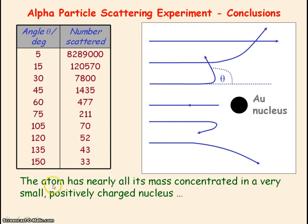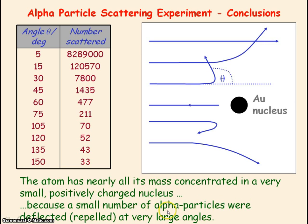The atom has a massive, tiny, positively charged nucleus because a small number of alpha particles were deflected at very large angles. The positively charged alpha particles were being deflected at very large angles because they were experiencing an electrostatic repulsion force from the positively charged nucleus.